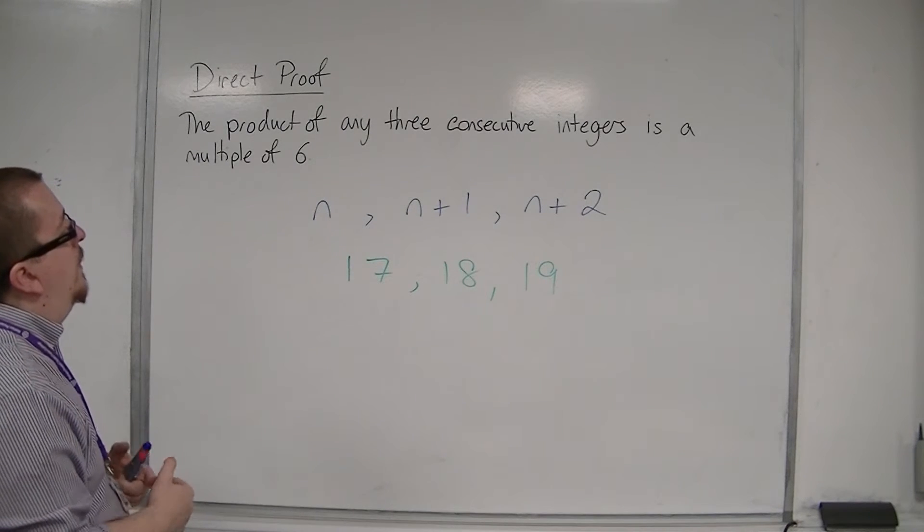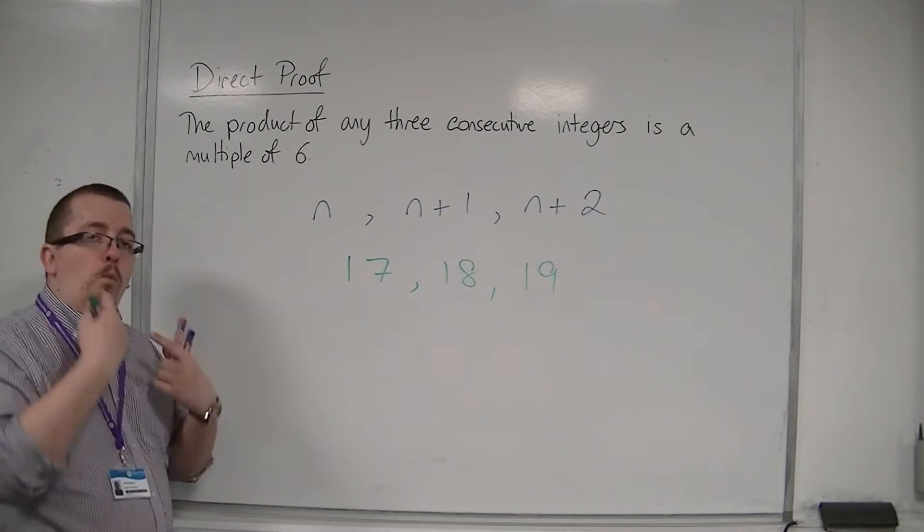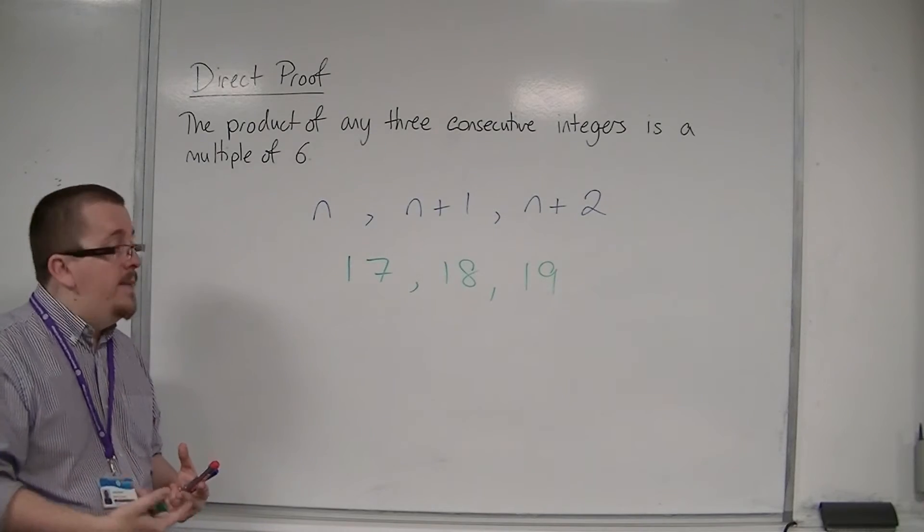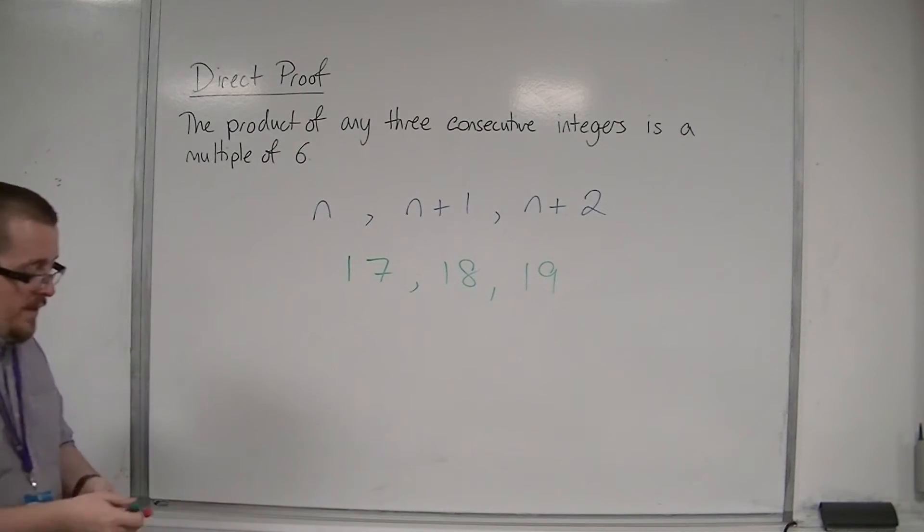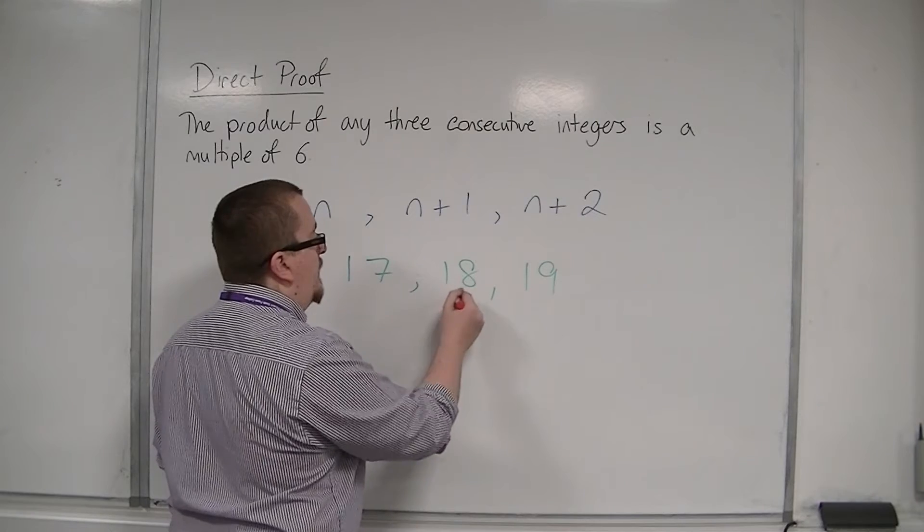then, because we have picked three consecutive integers, one of them, at least one of them, must be even. Because numbers go even, odd, even, odd, even, odd, at least one of them is even. And we can see that, in this case, 18 is even.